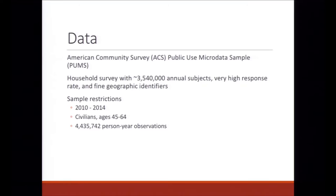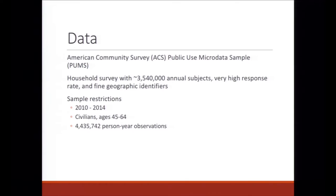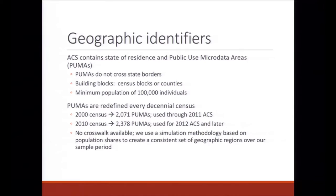The data we use is the American Community Survey — a large household survey with about 3.5 million annual subjects and a high response rate. A downside is that 2015 data are not yet available, so we're only using 2014 data, hence the preliminary caution. The 2015 data comes out October 20th. We focus on the civilian population ages 45 to 64, giving about 4.5 million person-year observations.